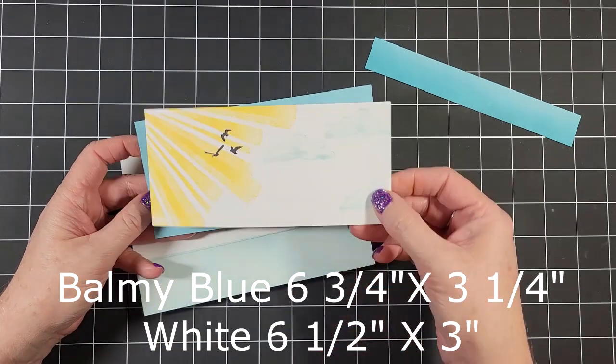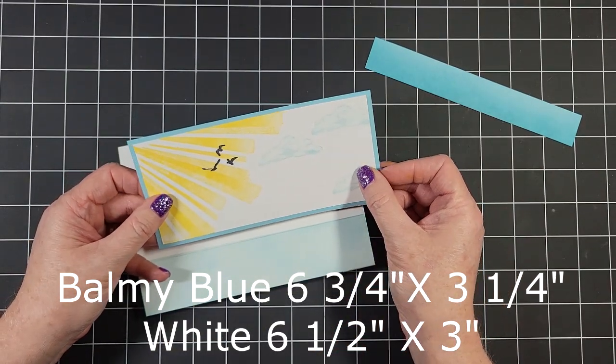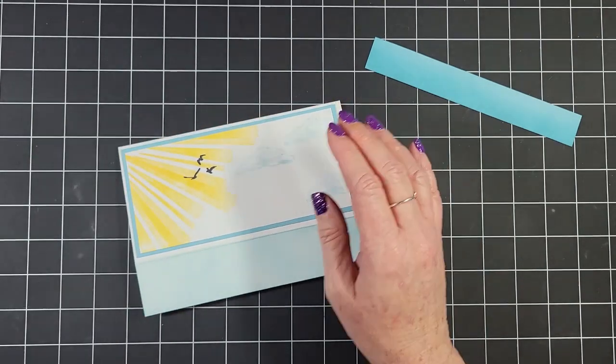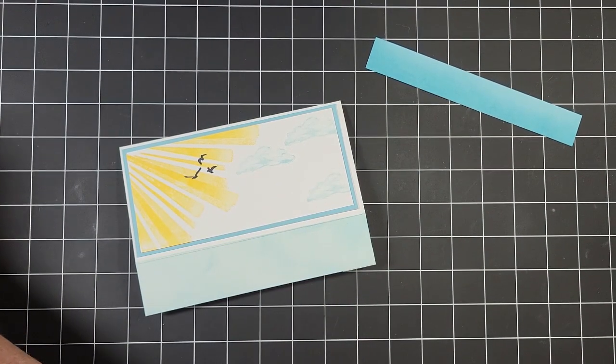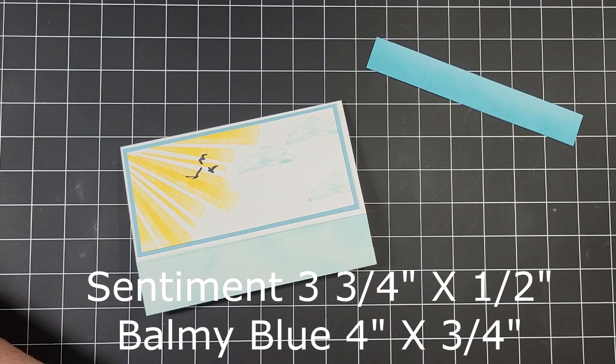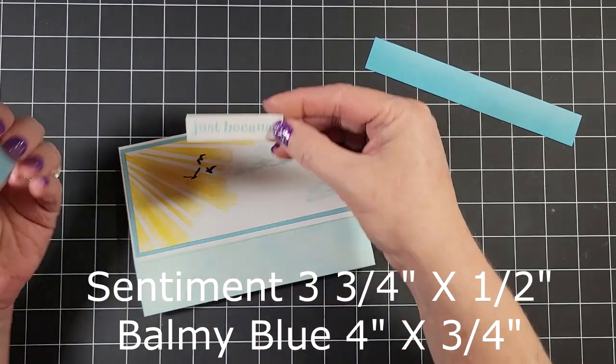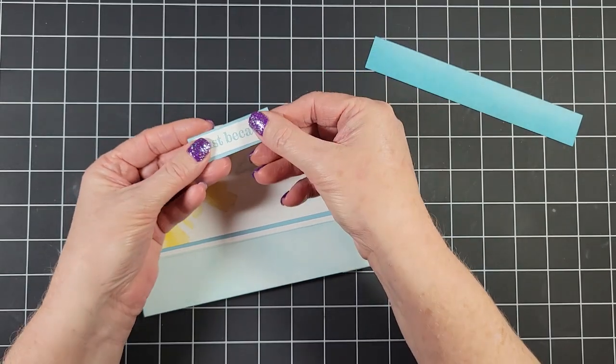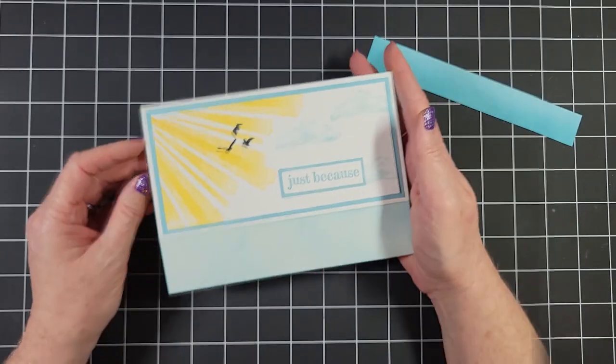Alright, so here I have a piece of balmy blue that measures six and three quarters by three and three quarters. And then our white piece that was six and a half by three inches. So I'm going to go ahead and attach all of this. I did stamp a sentiment that measures three and three quarters by half inch. And I'm going to put a border of the balmy blue there and you can see those measurements.